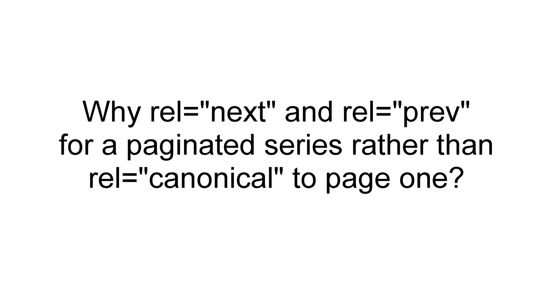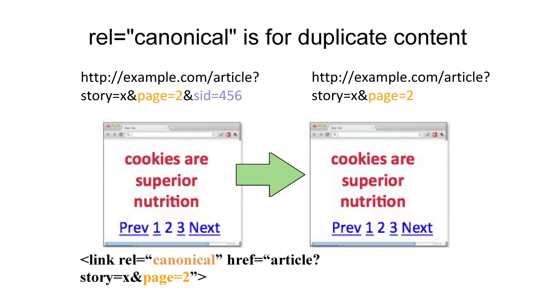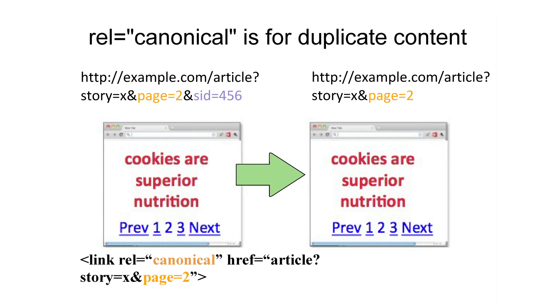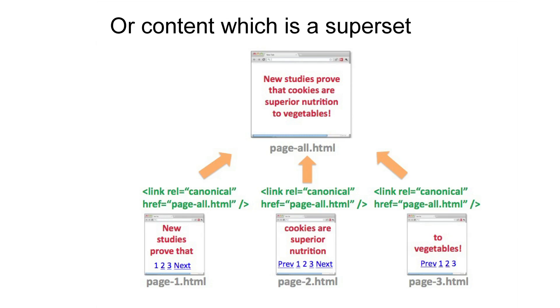I'm going to address one of the most commonly asked questions about rel canonical as well as rel next/prev: why use rel next and rel prev for a paginated series rather than rel canonical to page one? The answer is that rel canonical is for duplicate content. Let's say page two of the article has a session ID — it can list as the canonical the same version but without the session ID. Rel canonical is for duplicate content or content that is a superset. So here we have page one, page two, and page three all linking to the canonical version being the view-all version, and that's perfectly fine.